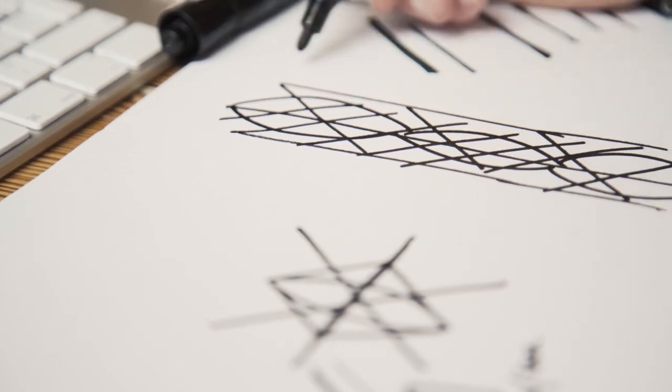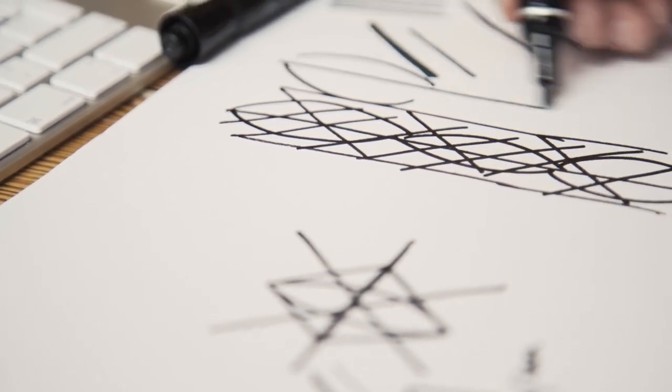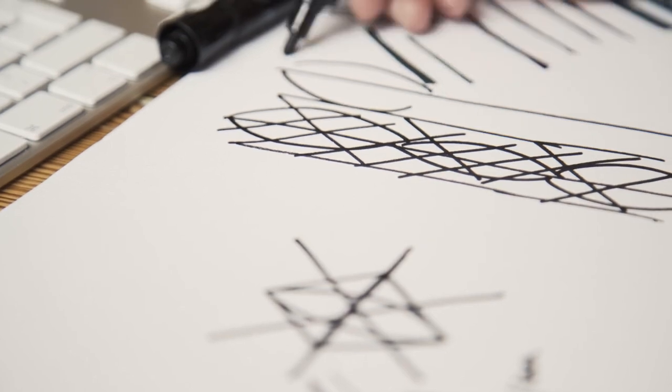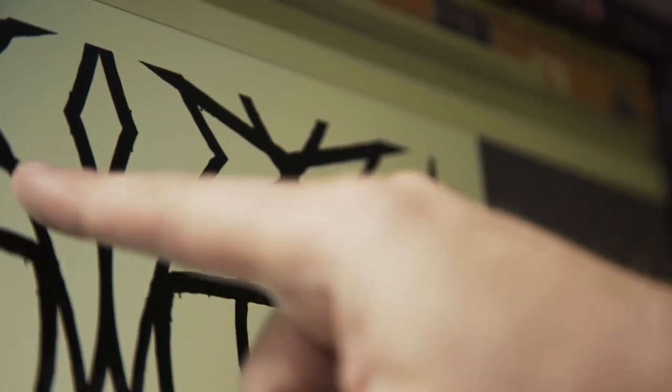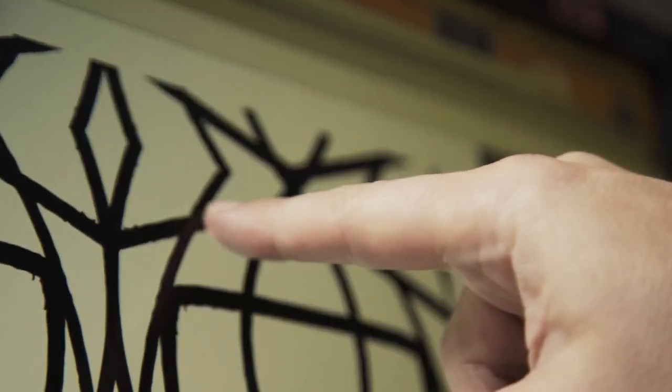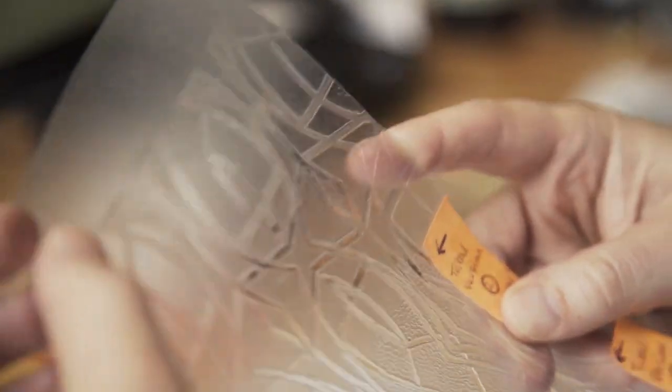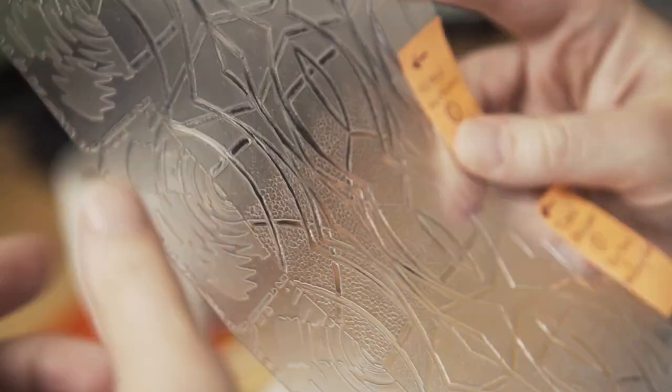So it was a case of just getting the right texture. Rough, rough line work. Bring out that sort of hand-drawn nature of the line work. And that can be replicated really nicely in the etching that Ian and Norman are going to do.